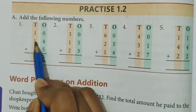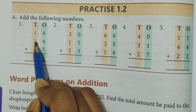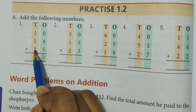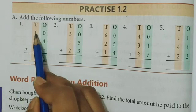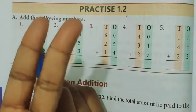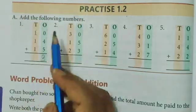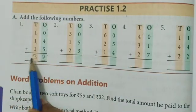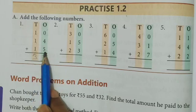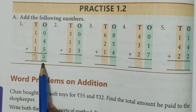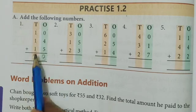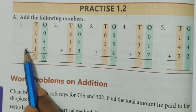Now see 1 plus 1, 2. And 2 plus 1, 3. That means 10 plus 14 plus 15 equals to 39. Answer is 39.